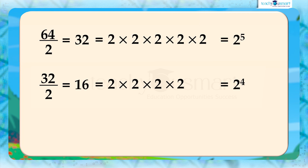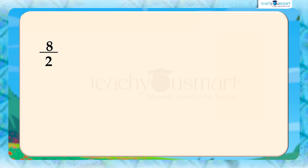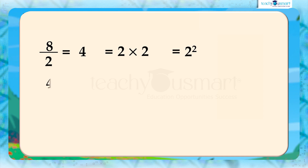Continuing like this, we can write: 16 by 2 equals 8, equals 2 multiplied by 2 multiplied by 2, equals 2 raised to 3. Then 8 by 2 equals 4, equals 2 multiplied by 2, equals 2 raised to 2. And 4 by 2 equals 2, equals 2 raised to 1.